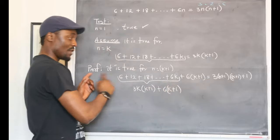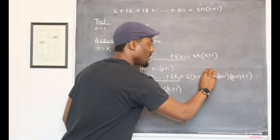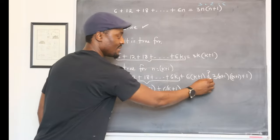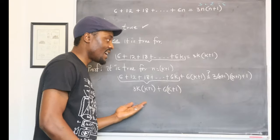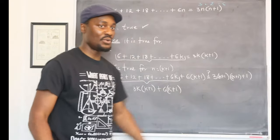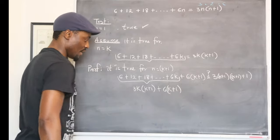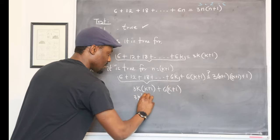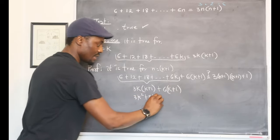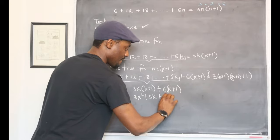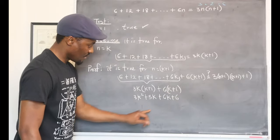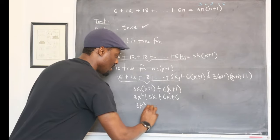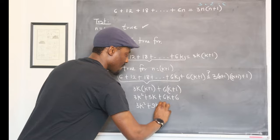Remember, we're not sure this is correct. We're trying to prove it. So it's always safe to put a question mark. Put a question mark on the equal side. Now, if you can make this left-hand side equal to the right-hand side, you have proved it. So let's see how we can arrange this so it works out. Let's open the parenthesis. This is going to be 3k squared plus 3k and this is going to be plus 6k plus 6. If we put these two together, it gives us 9k. So this is going to be 3k squared plus 9k plus 6.